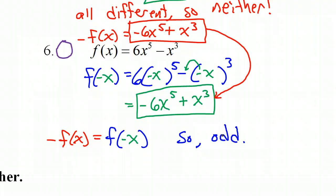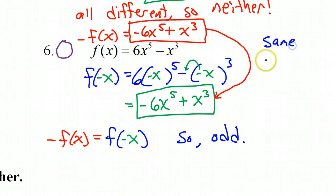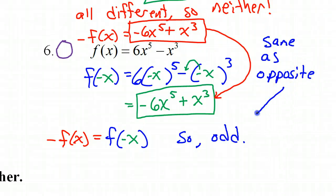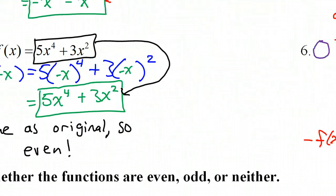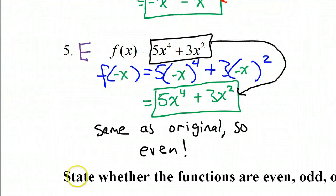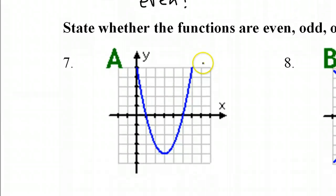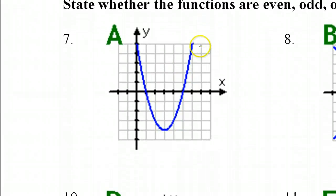Same as opposite means odd. That is how you prove algebraically that something is even, odd, or neither.